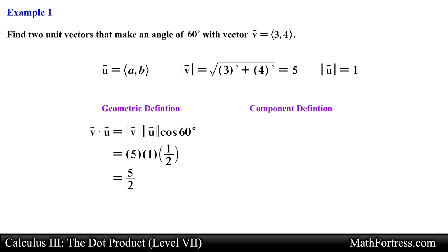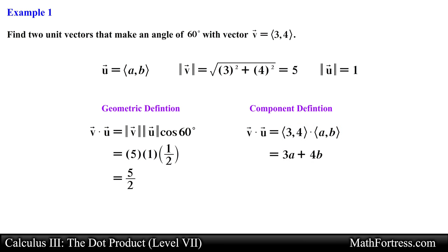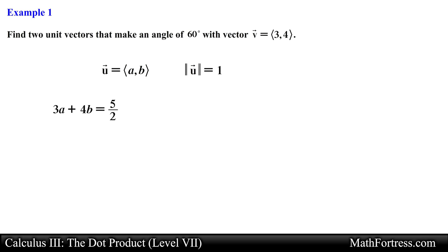Next we use the component definition to find an expression for the dot product between vector v and vector u. In this case it will be equal to 3a plus 4b. We then equate this expression with the value obtained using the geometric definition, in this case 5 over 2. This is our first equation.